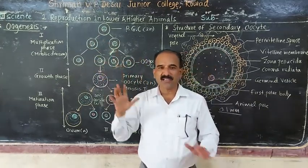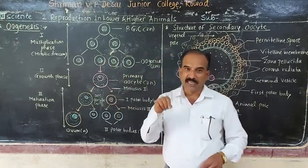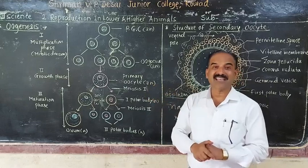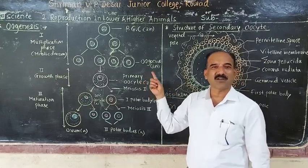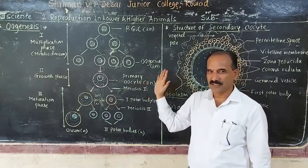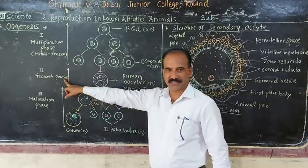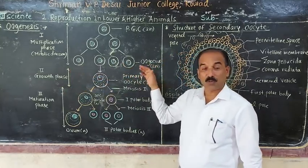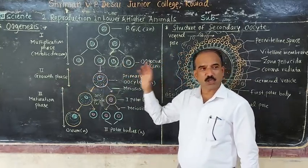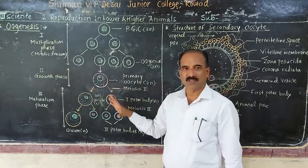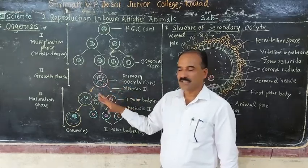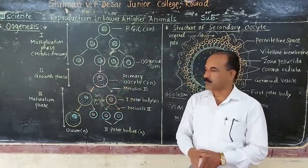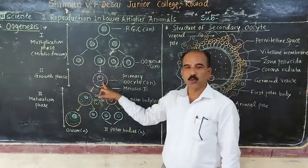Oogenesis is completed in the embryonic stage of the human female. The second step is the growth phase. One of the oogonia stops division and increases in size to produce the primary oocyte.